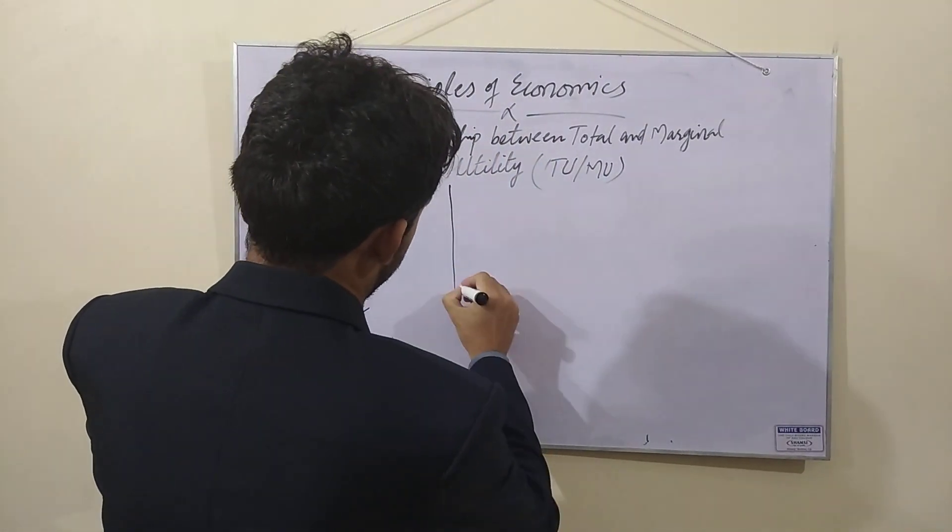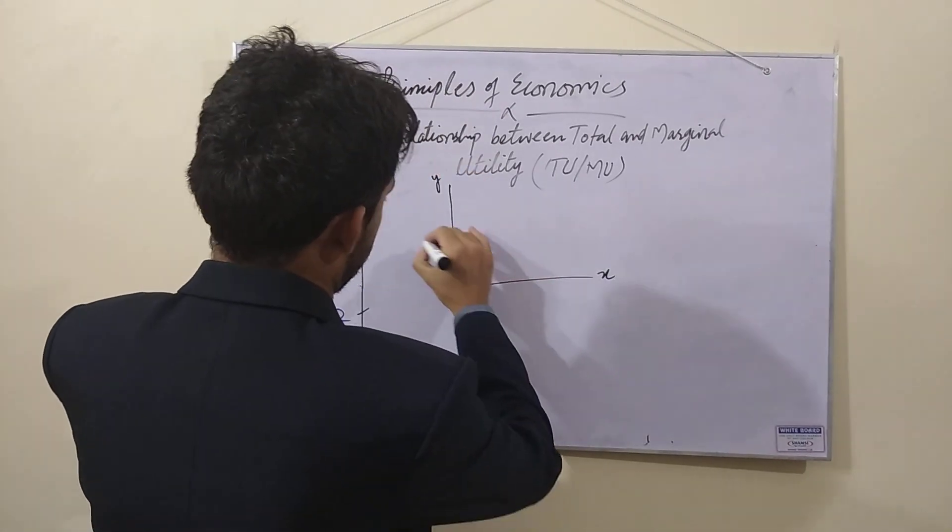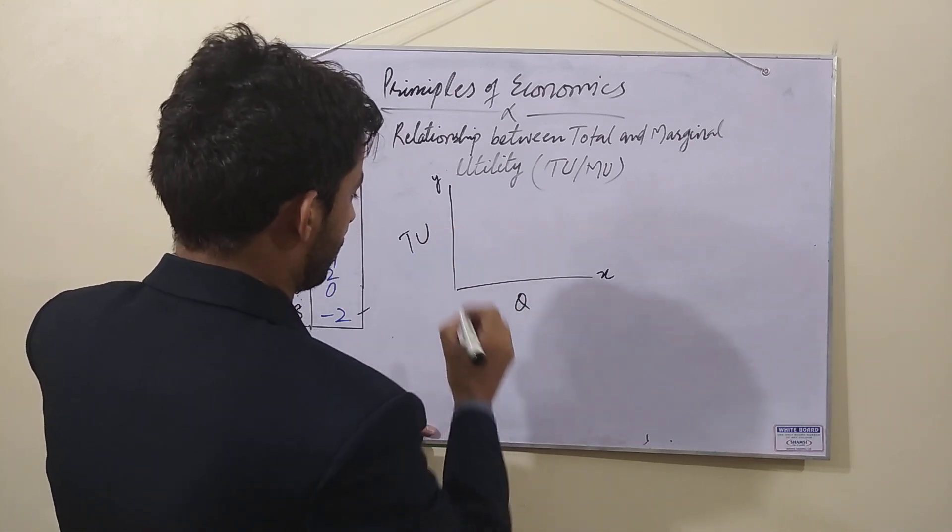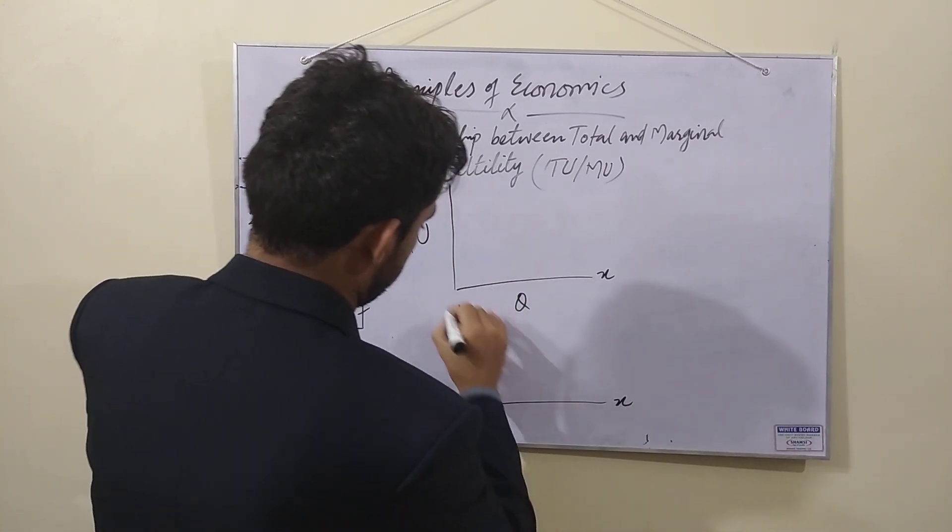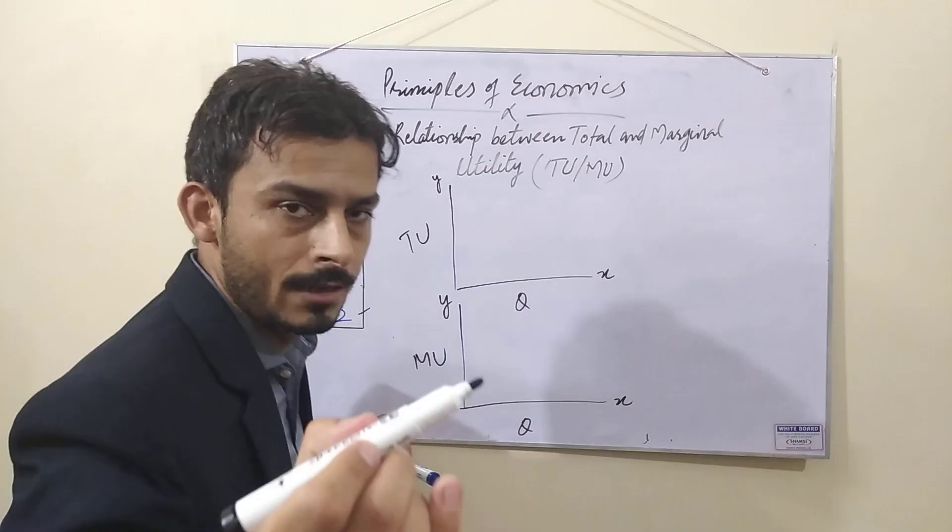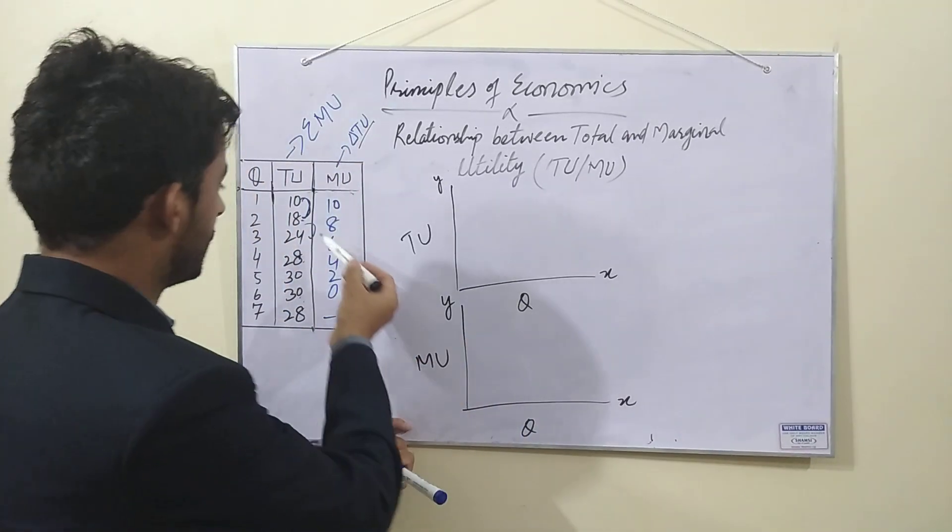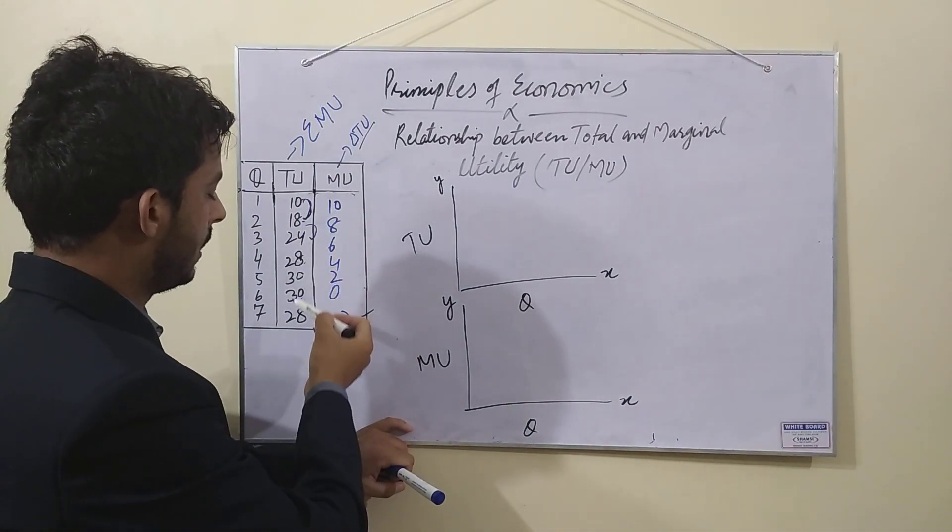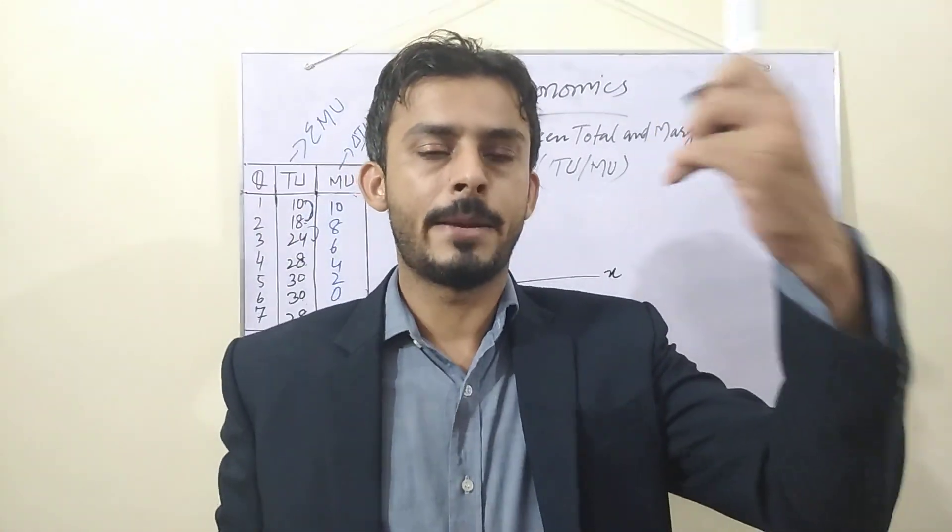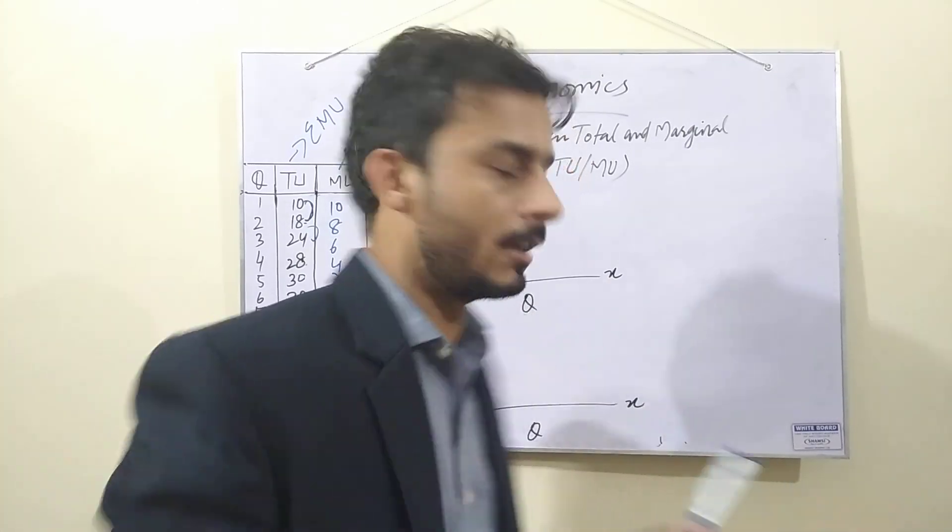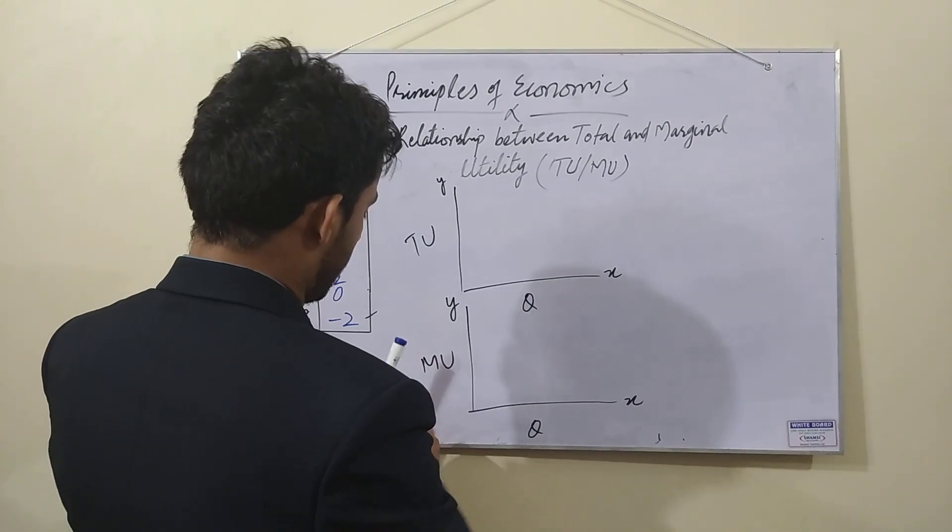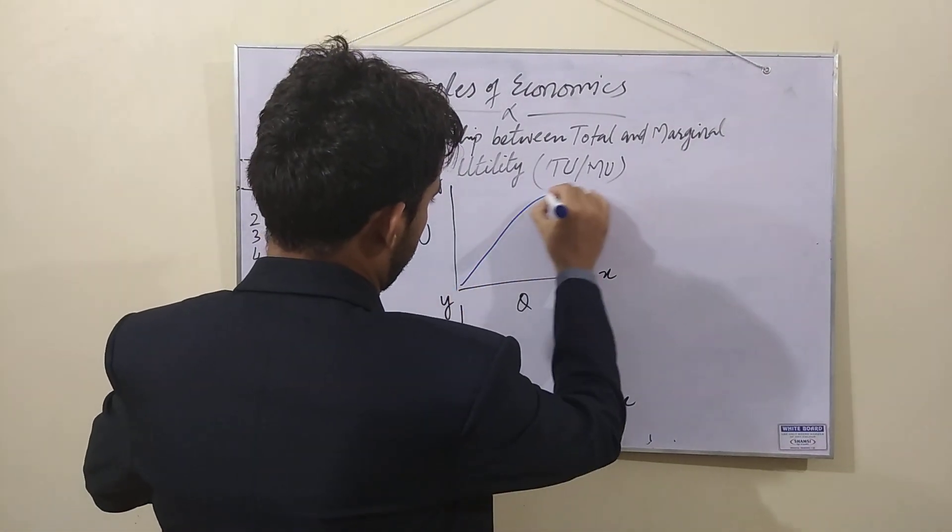We have x-axis, y-axis. X-axis, y-axis total utility. X-axis, y-axis quantity marginal utility. Now, what is the schedule you have calculated? What is the schedule? 10, 18, 24, 28. Total utility increases and then decreases. When we plot it, it will become this curve.